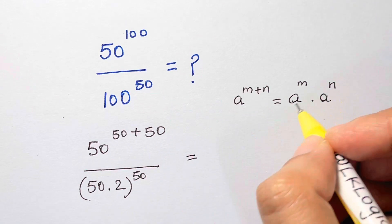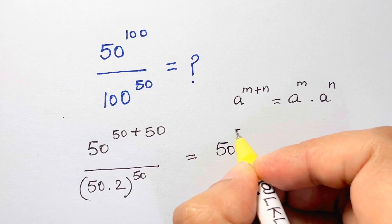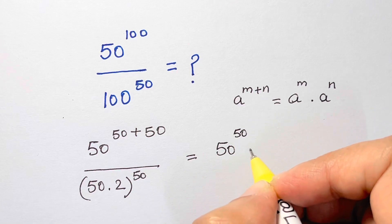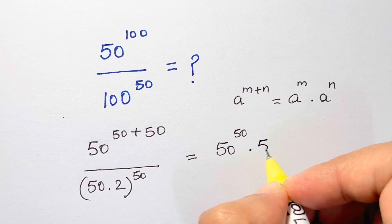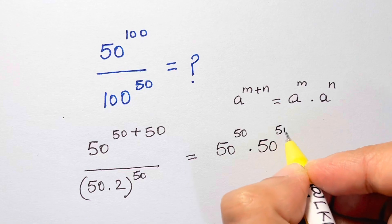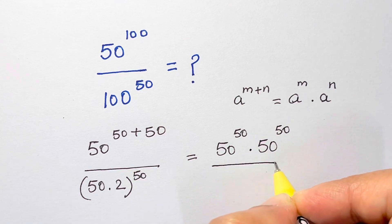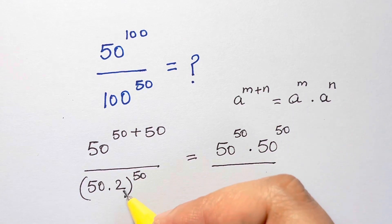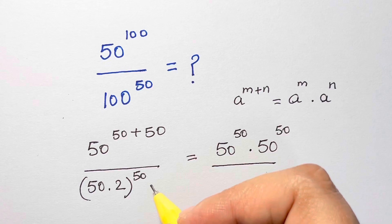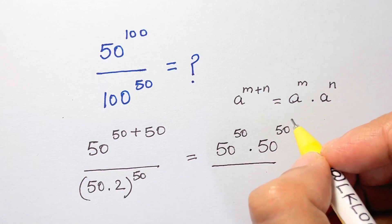Let us put it back in this form. So we have 50 to the power of 50 times 50 to the power of 50, over 50 times 2 to the power of 50.